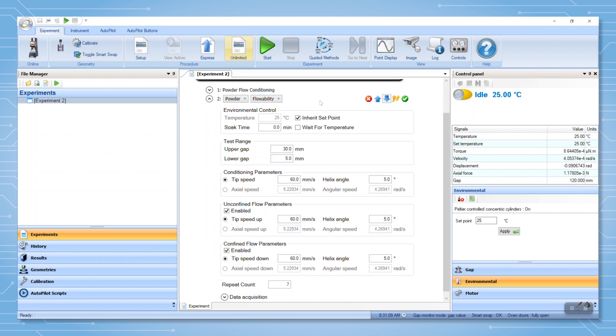To measure flow ability at different rates or temperatures, add a duplicate powder flow ability step and enter the desired temperature or tip speed. Depending on the powder, it is recommended that the powder be equilibrated at temperature for at least 30 minutes.